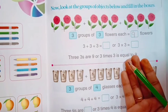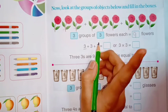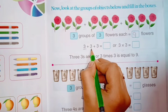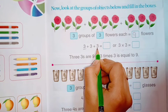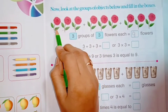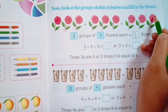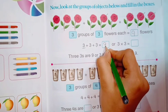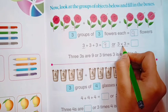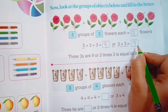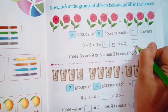Agar hum inko repeated addition karte hain: three plus three plus three. Ek group mein teen flowers hain aur teen groups hain, to hum isko three time likhenge. Add karenge to count kar sakte hain: one, two, three, four, five, six, seven, eight and nine. So the answer is nine. Hum is tarike se bhi likh sakte hain: three multiply three is equal to nine. Three ones are three, three twos are six, three threes are nine. So answer nine aaya.